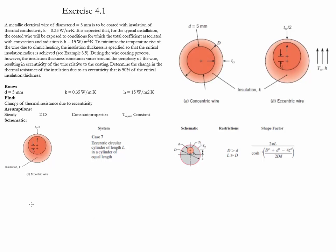In order to calculate the shape factor, we first need to calculate the eccentricity value z. Z is equal to half the critical thickness of the problem. For the values given, this eccentricity is equal to 0.01 meters.